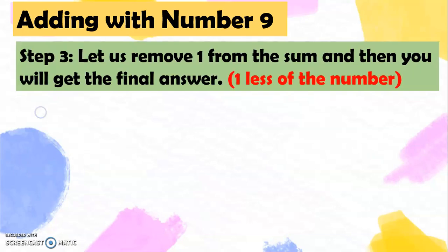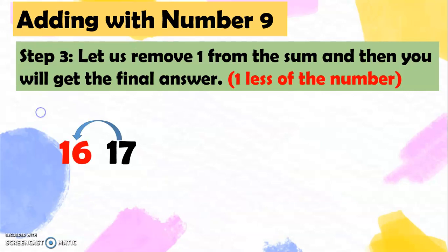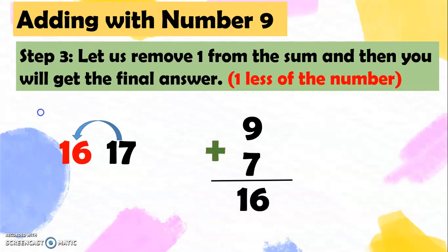Now for step 3, let us remove 1 from the sum and you will get the final answer. We're going to use again the 1 less of the number. So we have the sum 17 — what is the number that is 1 less than 17? Very good, it's 16. So 9 plus 7 equals 16. That is adding with number 9.